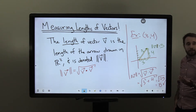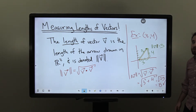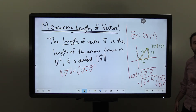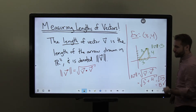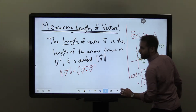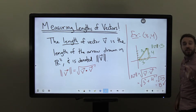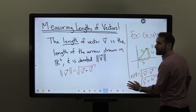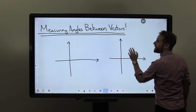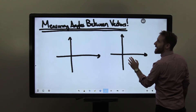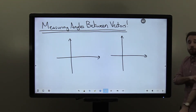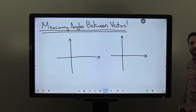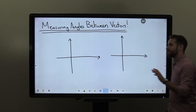So we can use this formula and the dot product to calculate lengths of vectors. There's another way that we can use the dot product geometrically, and that is to measure angles between vectors. Before I formally explain how to do this, I want to clarify what I mean when I talk about an angle between vectors.